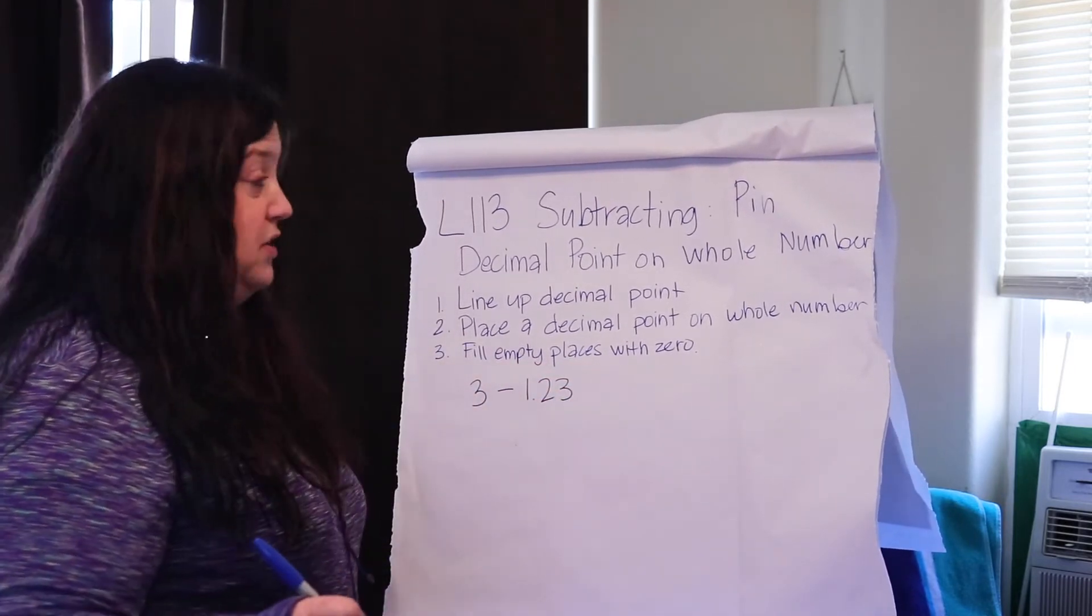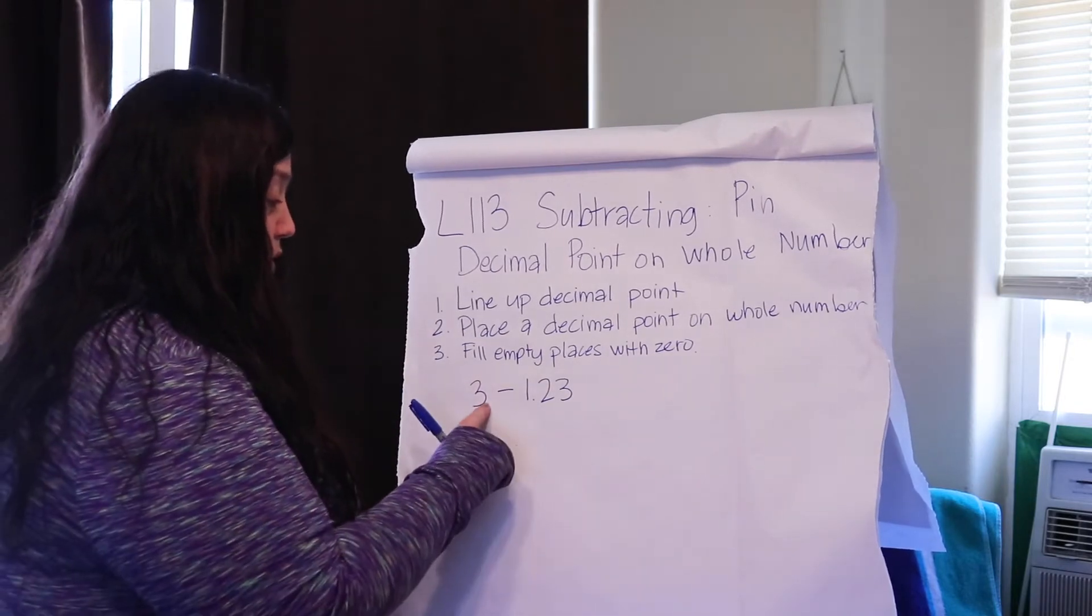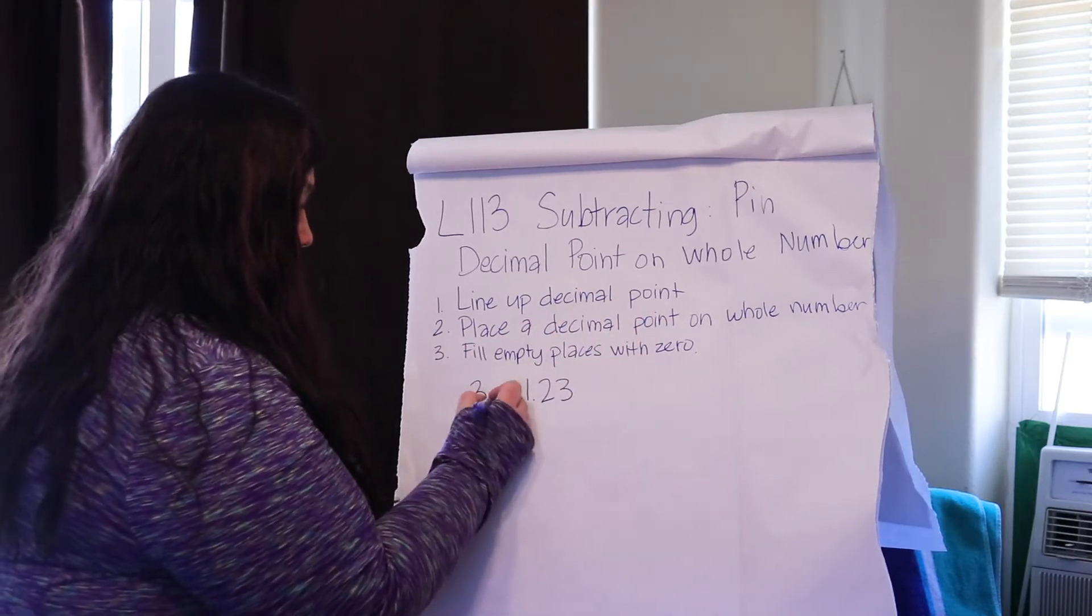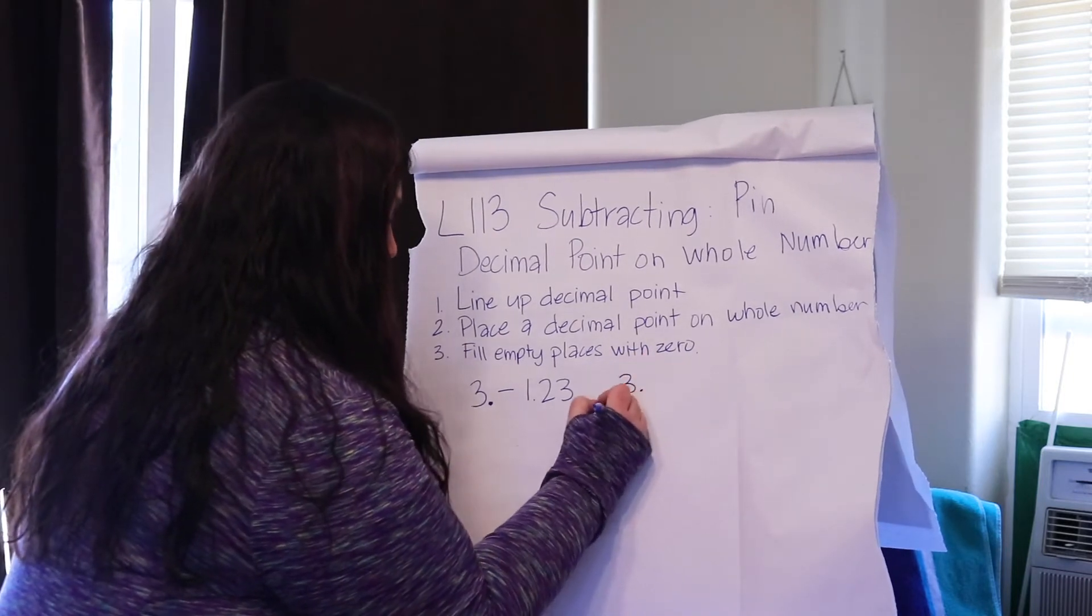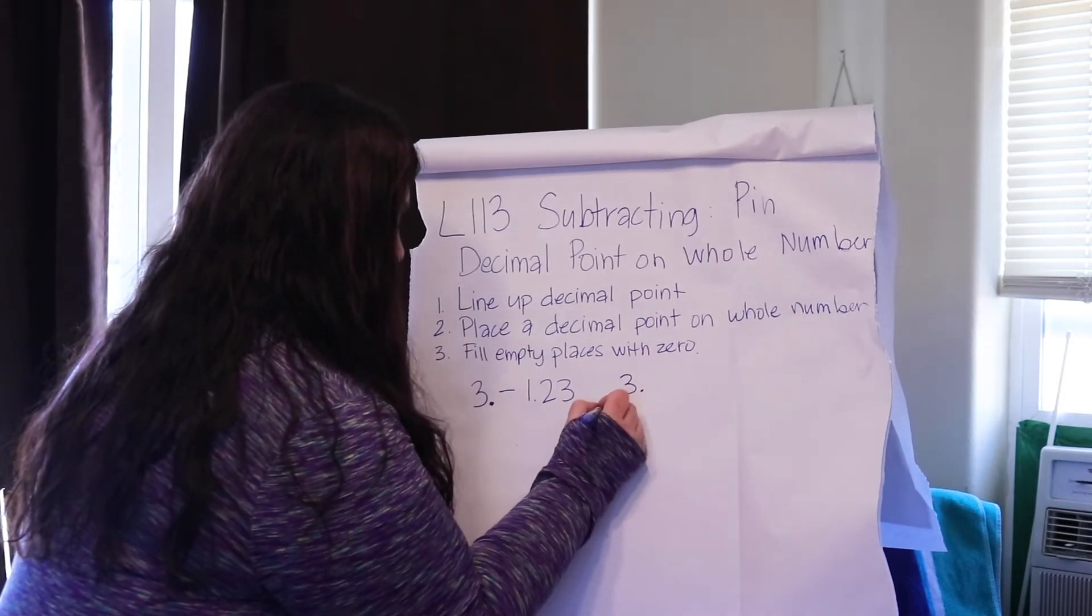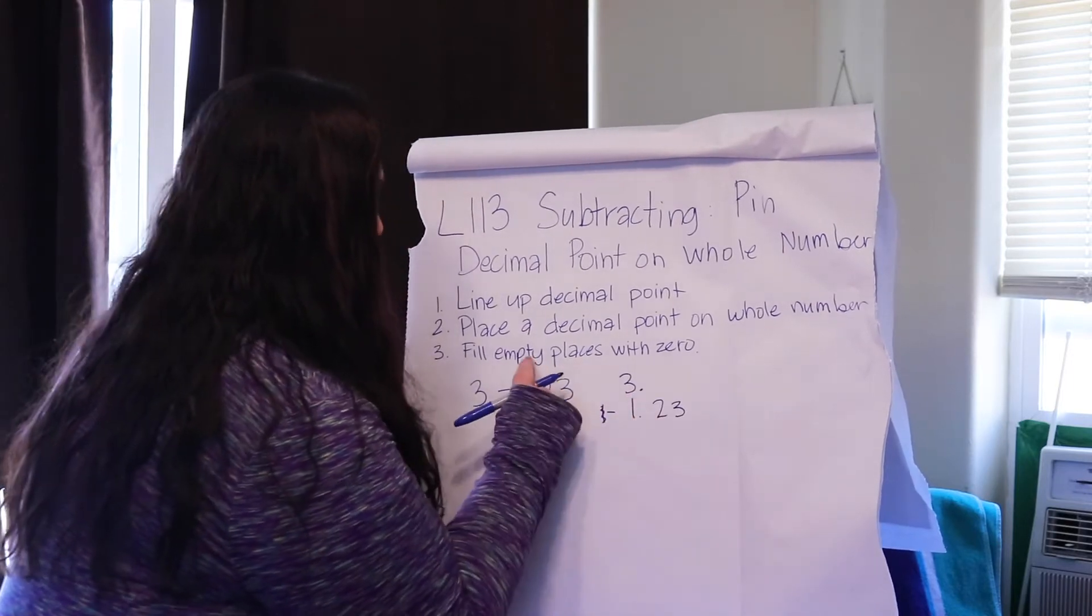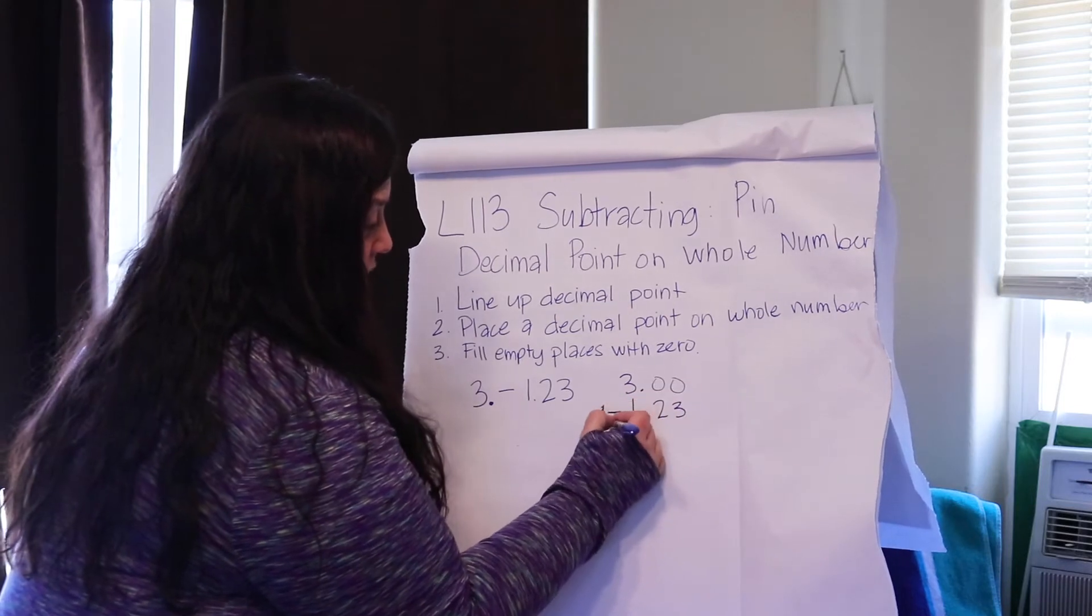What we need to do first is line up our decimals. Okay, well, what do we do when we don't have a decimal here? We place it right there. So now we'll have 3 point, and then there's a subtract, 1.23. And the last thing we learned in our lesson was to fill in zeros, and so that's what we're going to do.